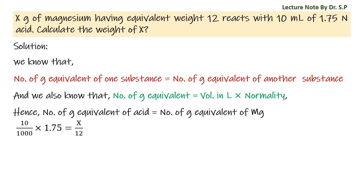Here 10 by 1000 is written to convert milliliter into liter and given normality of acid is 1.75 N. X is the required weight of magnesium in grams and 12 is the equivalent weight of magnesium.